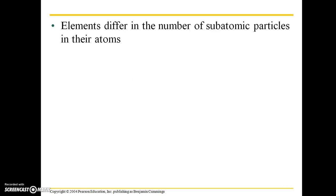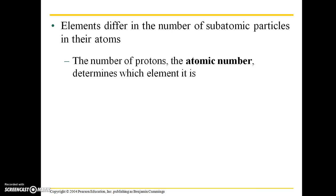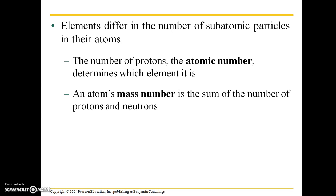Elements differ in the number of subatomic particles that are in their atoms. The number of protons, which is equivalent to the atomic number, determine which element it is. An atom's mass number is the sum of the number of protons and neutrons. Mass is a more general term. It's just a measure of the amount of matter in an object.